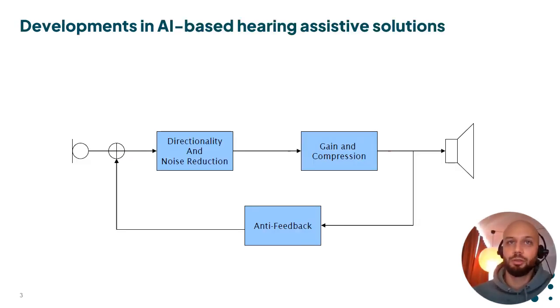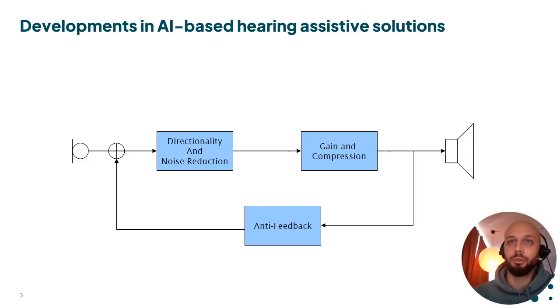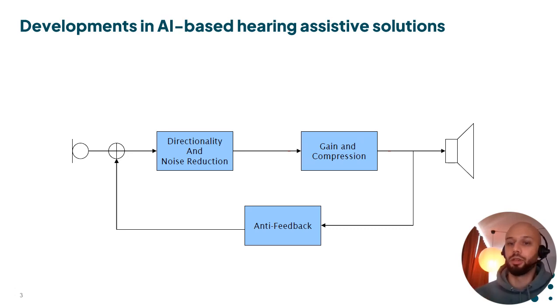From a signal processing point of view, a hearing aid usually consists of three main blocks: a noise reduction block, followed by a gain and compression block which we call hearing loss compensation, and then an anti-feedback block.